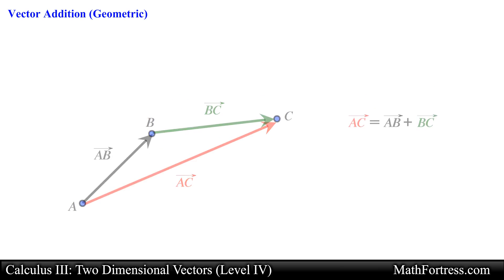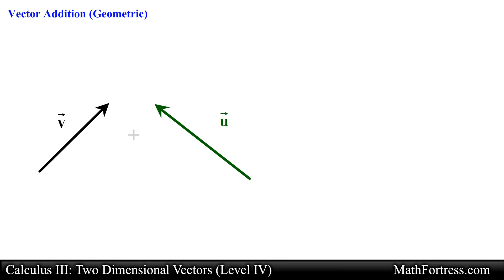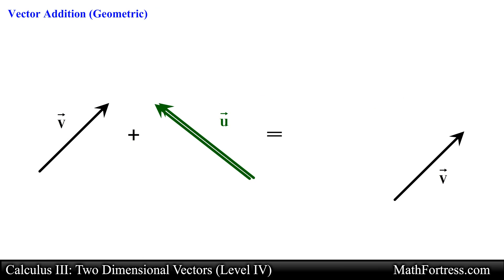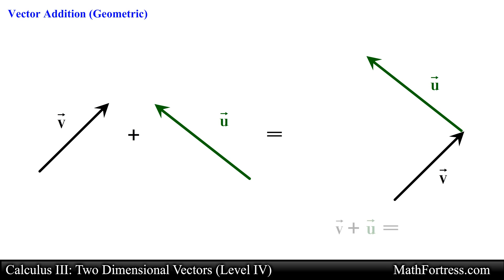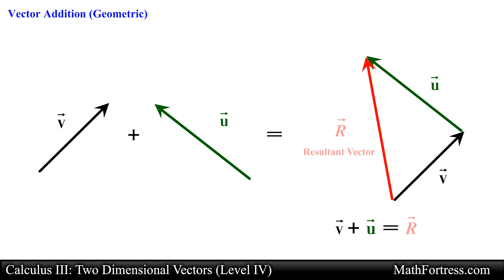In general, if we start with vectors V and U, we can geometrically find the sum of these two vectors by first moving vector U — making sure we do not change its magnitude or direction — so that its tail coincides with the head or tip of vector V. We can then define the sum vector V plus vector U as the vector whose initial point coincides with the initial point of vector V and extends to the terminal point of vector U.